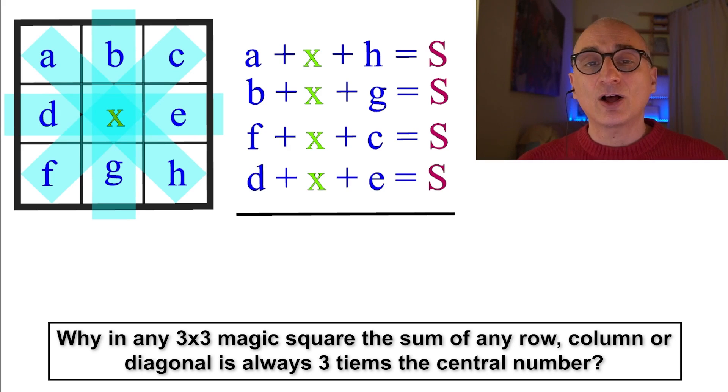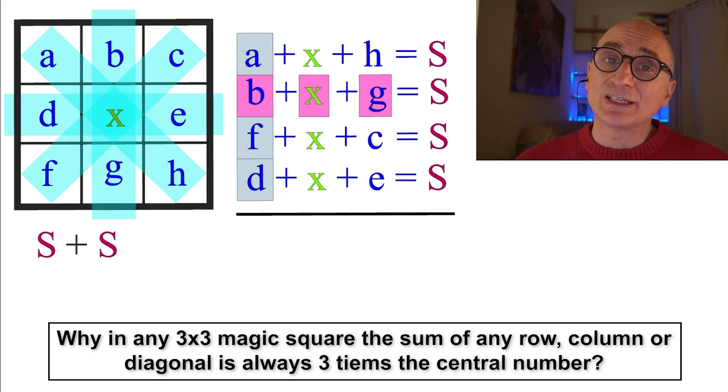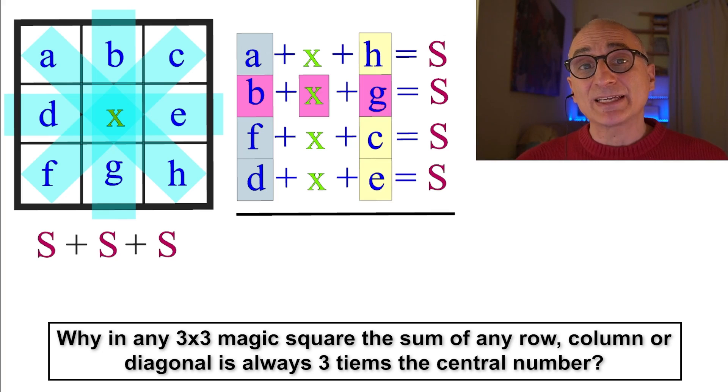Now we add all the equations together vertically and observe that a plus f plus d is S, b plus x plus g is also S because that's a row, h plus c plus e is S because that's a column.